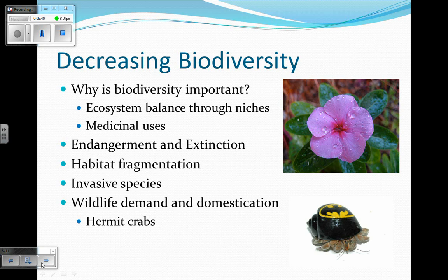Another problem is decreasing biodiversity. Biodiversity means different types of life. When we have a lot of different types of life, we have balance in the world, because every organism has a niche — a function. When there are enough functions being done by enough organisms, there's more balance in the ecosystem. There are also lots of diverse places with plants we can use for medicine. The periwinkle, pictured here, has a chemical that can be used to cure leukemia, a very serious cancer that children get. A lot of children used to die before we found this flower, but now most children will survive leukemia because of its medicine.